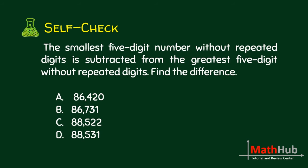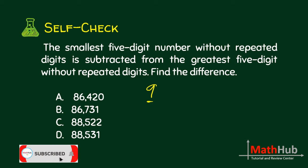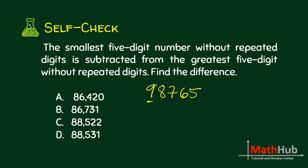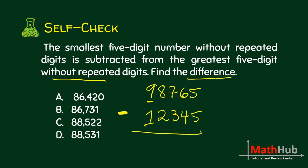The smallest five-digit number without repeated digits is subtracted from the greatest five-digit number without repeated digits — find the difference. The greatest five-digit number with no repeated digits is 98,765. The smallest is 12,345. Subtracting gives the answer of 86,420.